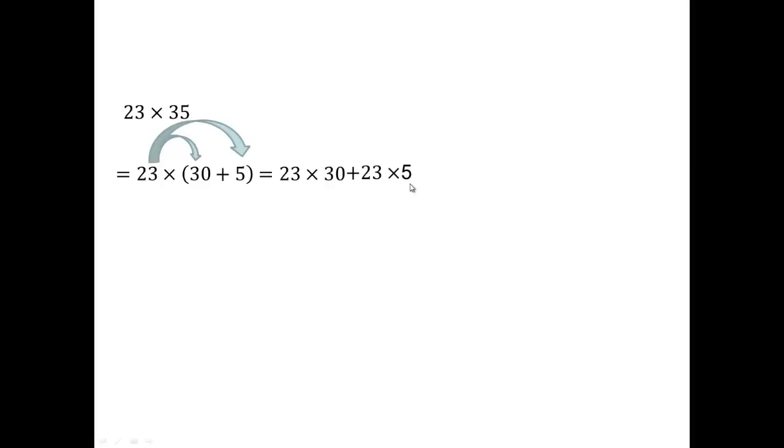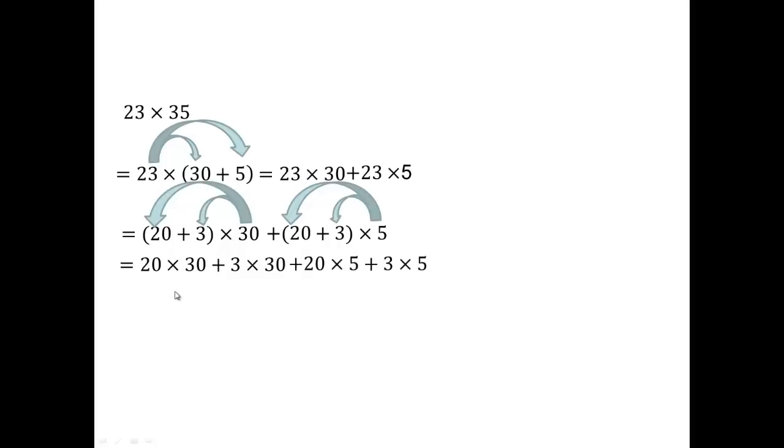OK. Now once you have that, we still have to do 23 times 30. So 20 plus 3 times 30. So again, we're using distributive property to multiply. So 30 times 20, 30 times 3, 5 times 20, and 5 times 3. And now let's write it all out. So 600, 3 times 30, 90. 20 times 5 is 100. And 3 times 5 is 15 for a total of 805.